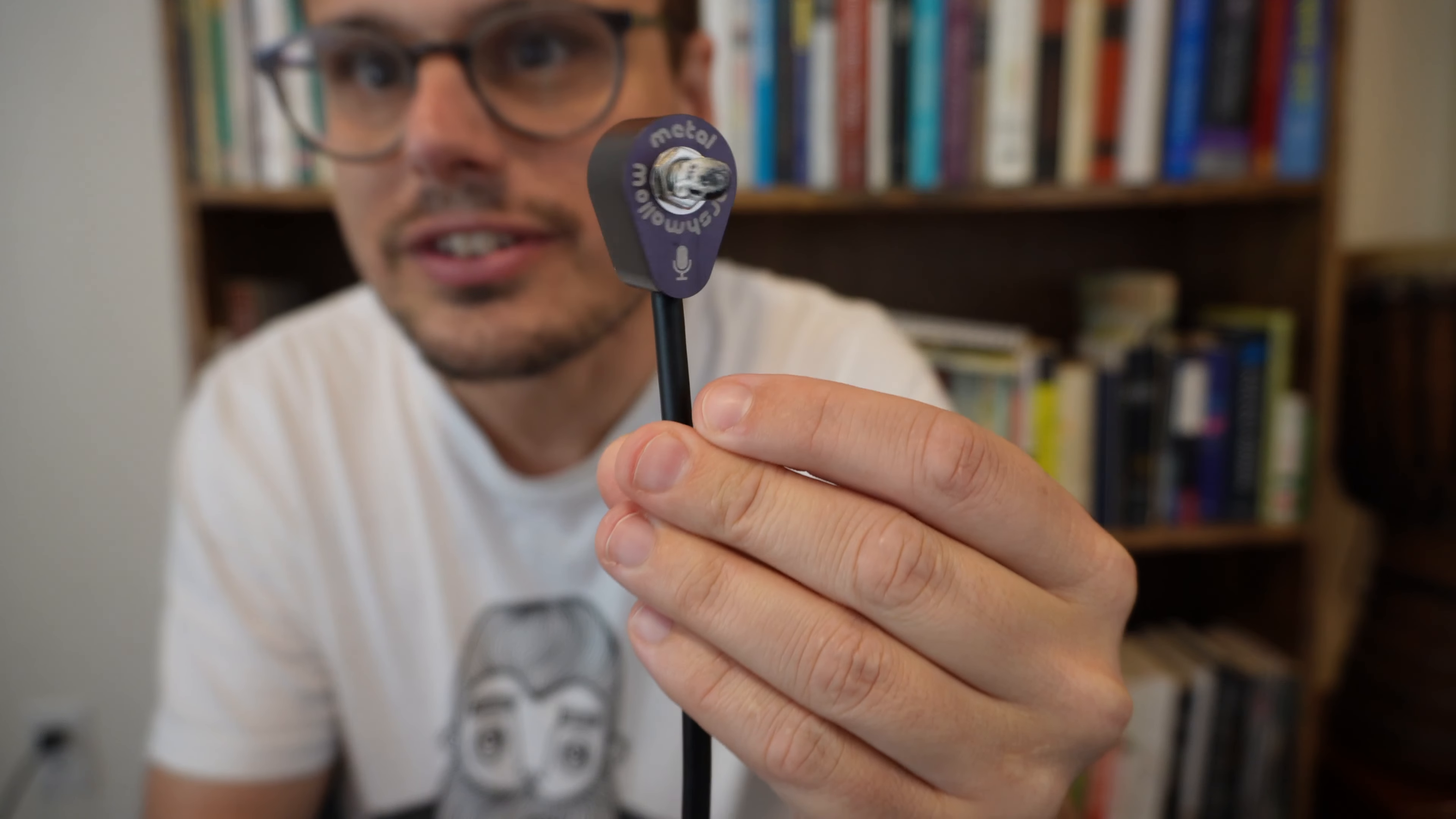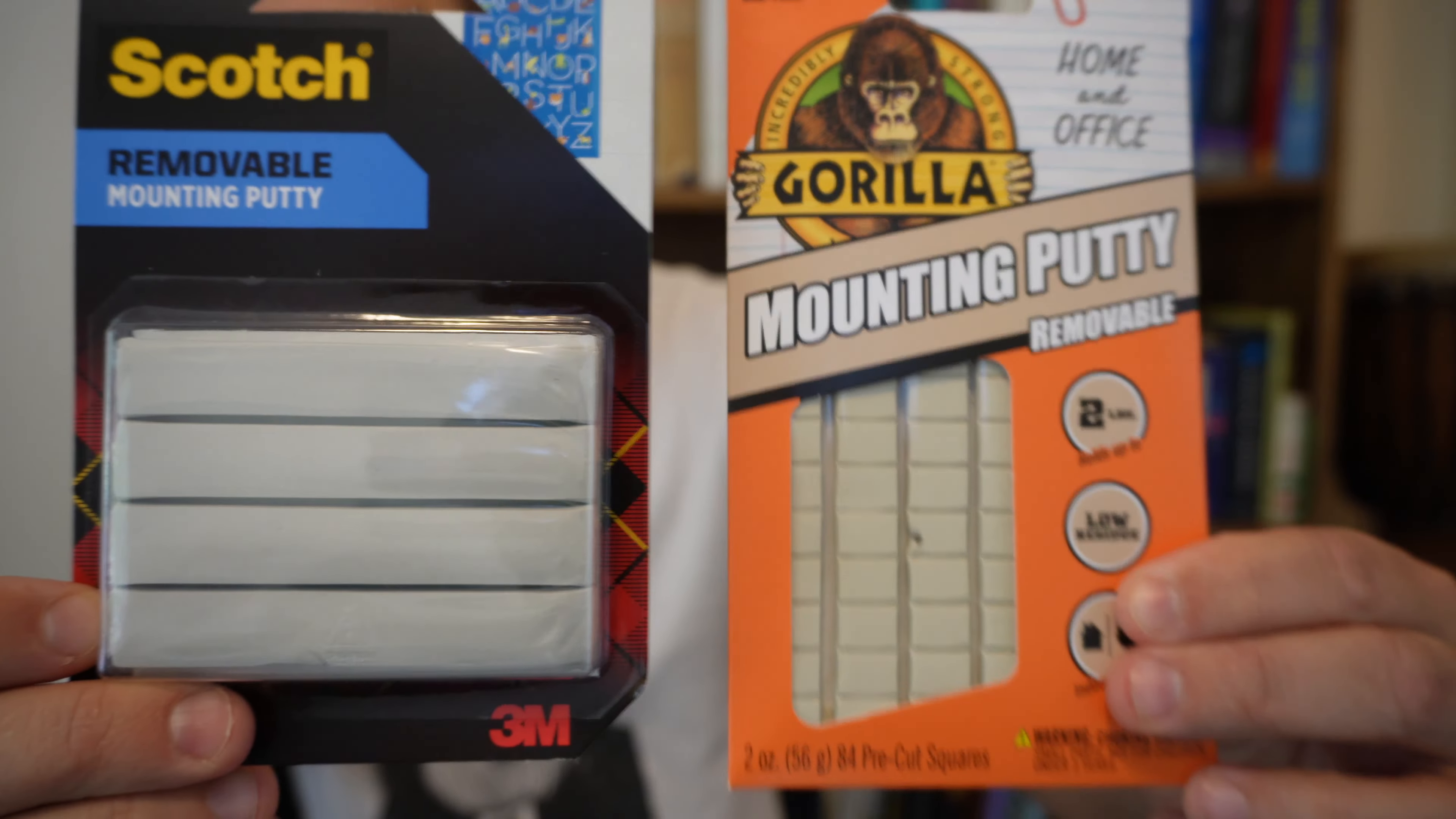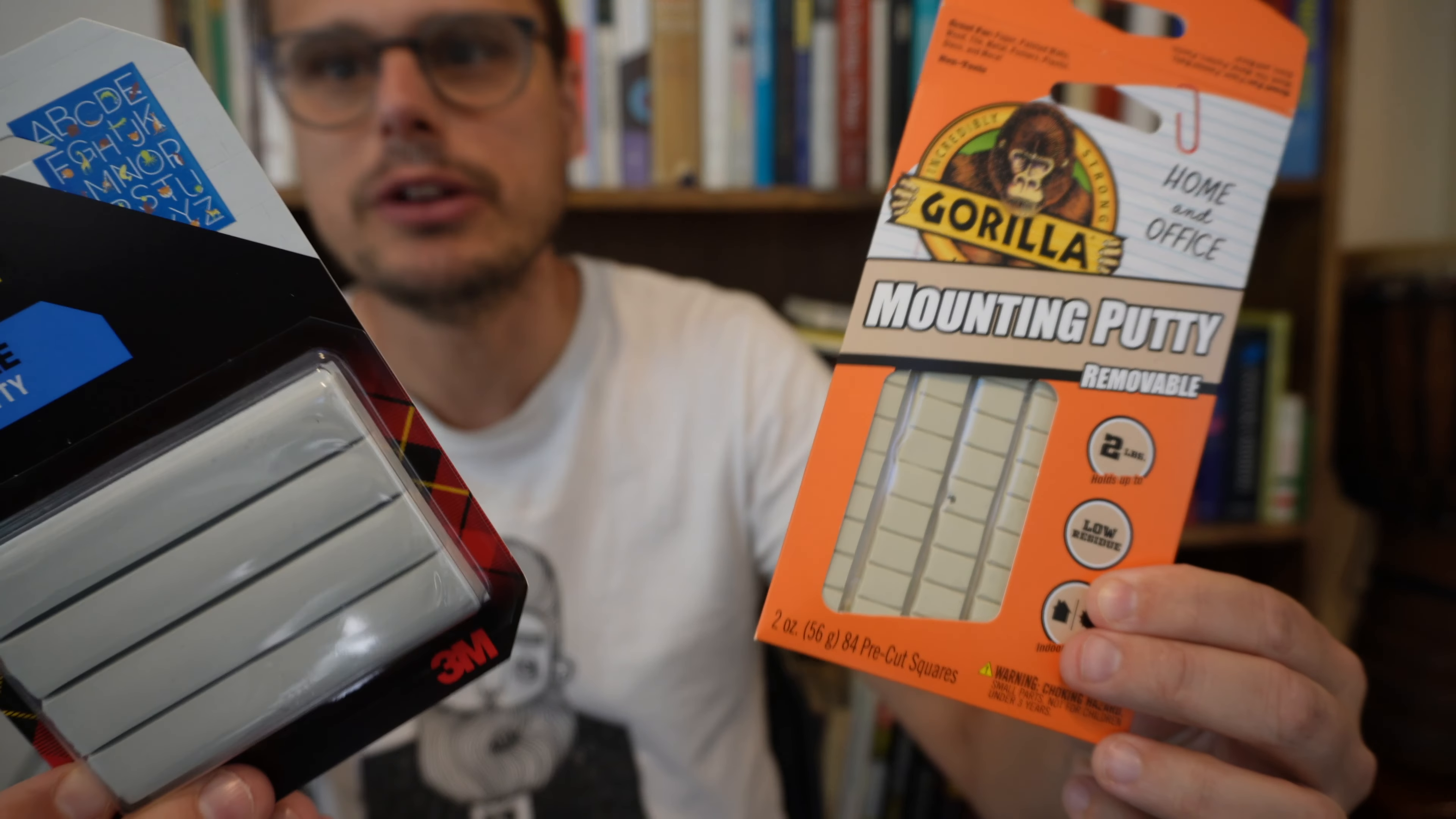You may have seen me using this white poster putty to stick contact mics to things, and the three questions that I get asked about that are: first of all, what is it? That's easy to answer—it's white poster putty or white tack, it's sometimes called, and there are a bunch of different brands of this and I don't have any preference.